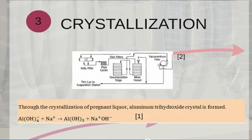Step 3. Through the crystallization of pregnant liquor, aluminium trihydroxide crystal is formed.